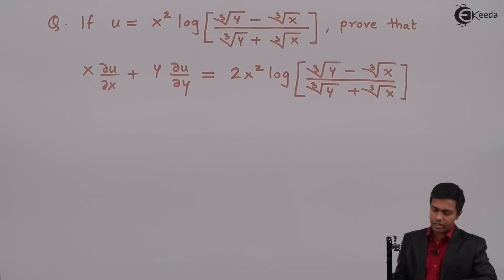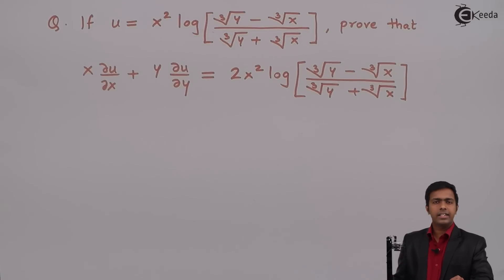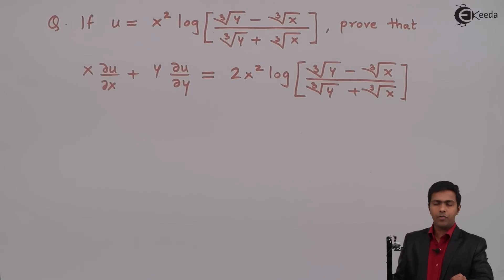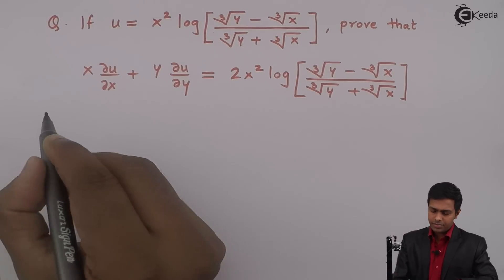For this we are going to use Euler's theorem. For Euler's theorem, we first have to prove that the given function is a homogeneous function. If we can prove that, then by Euler's theorem we can get the required value.